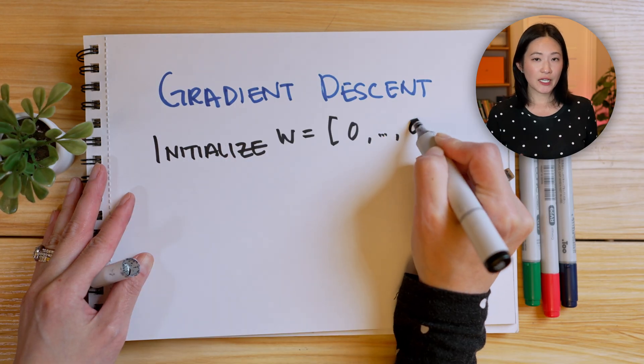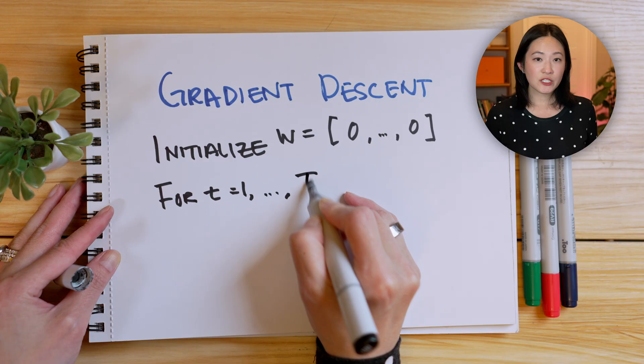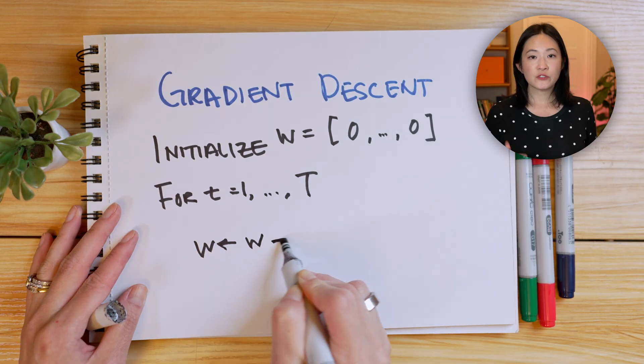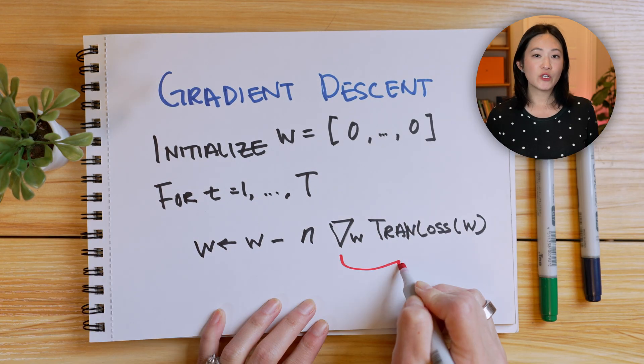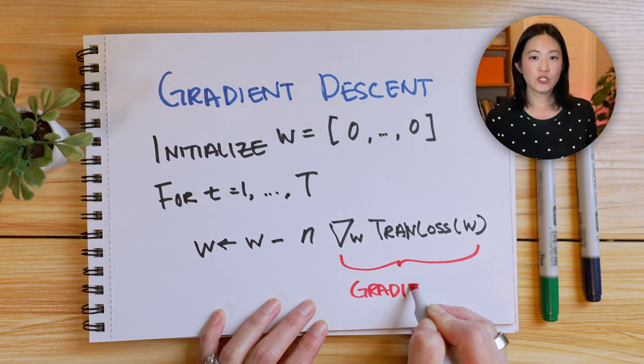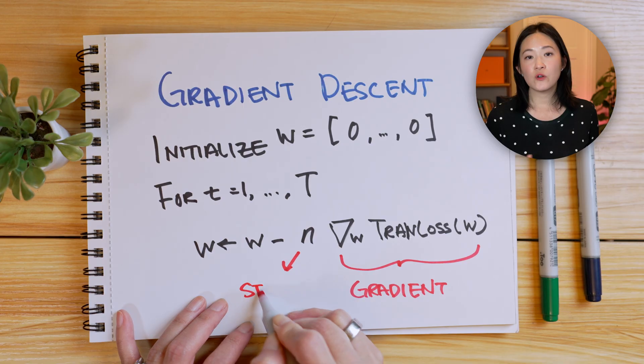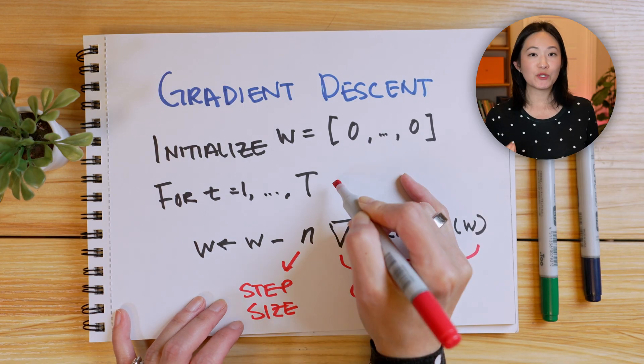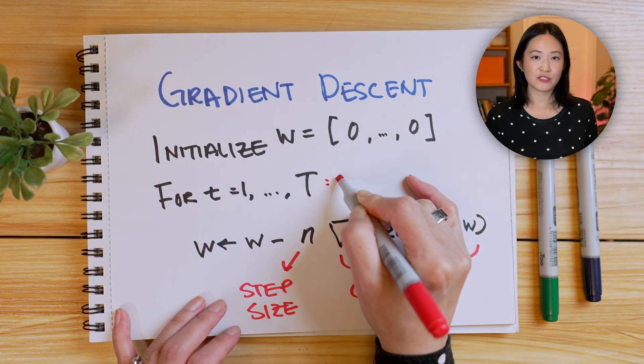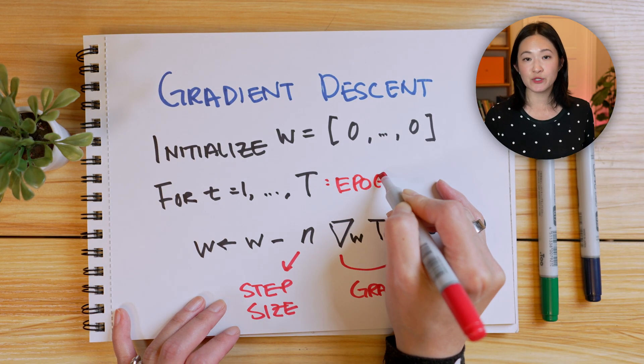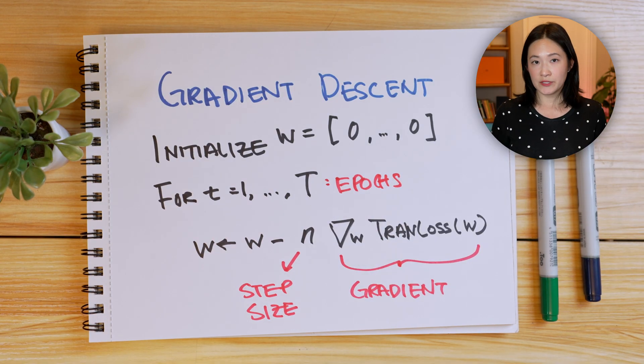The gradient of the training loss tells us which direction to go to reduce the loss the fastest. This process is called gradient descent. We start with an initial guess, like zero, and keep adjusting it for a certain number of steps. Each time we adjust by a small amount, which we call the step size η, and we repeat this process for a certain number of iterations t, which we call epochs.